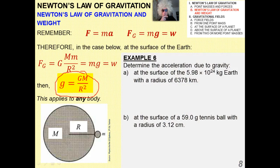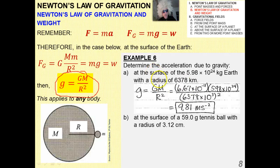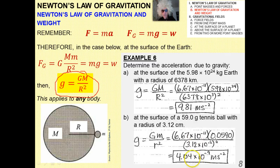For Example 6, find the acceleration due to gravity at the surface of the Earth — you know it's 9.81 meters per second squared, and using the formula you get that number. A more interesting question: find the acceleration due to gravity on the surface of a tennis ball. It does have one, but it's really tiny — you would never be attracted towards a tennis ball and flung across the room, because the tennis ball cannot exert that much force or acceleration on you.